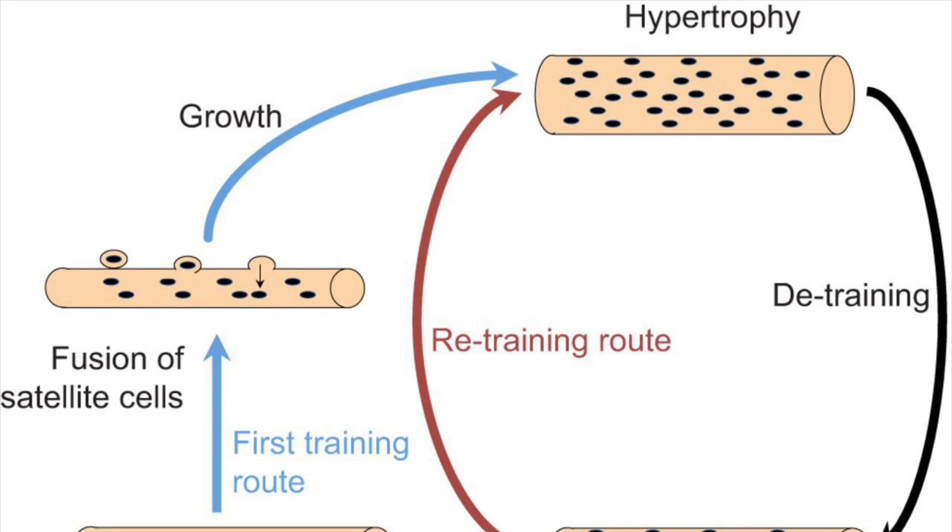The second factor is muscle damage. This means that after your session, your muscles should be sore one or two days later. If they are sore, it means you have achieved complete muscle damage. You have to understand that in every exercise and every session you have to damage your muscles properly to achieve hypertrophy.